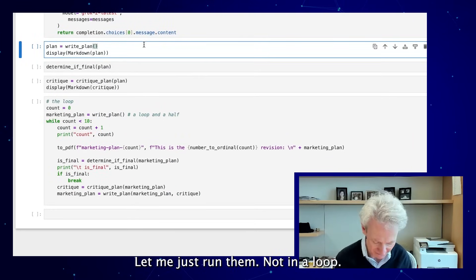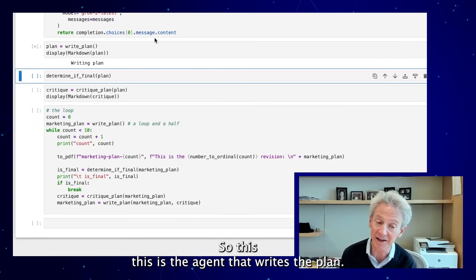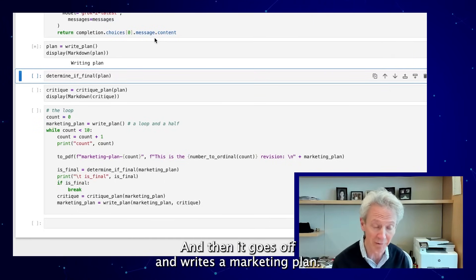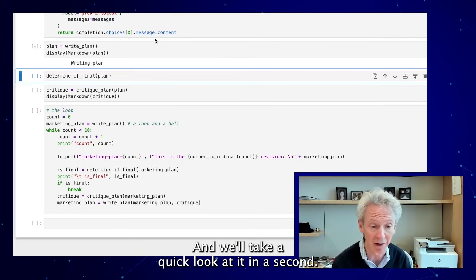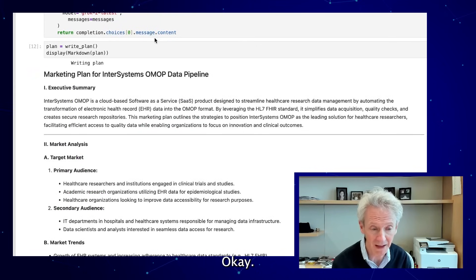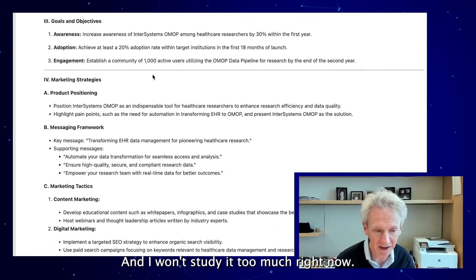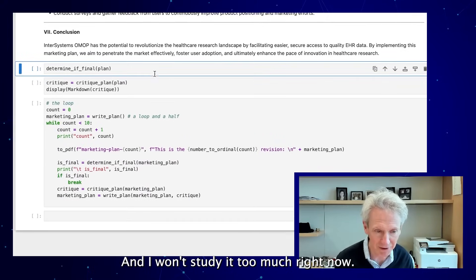Those are the three agents. Just so you see what they look like when they work, let me just run them, not in the loop. This is the agent that writes the plan. I send it the product description and then it goes off and writes a marketing plan. There is the marketing plan and I won't study it too much right now.